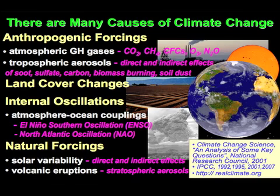First of all, we have to know the natural variability. Then we have to extract a small signal from the sun from what we think are bigger signals from anthropogenic change and land cover changes. And then we have to understand things like indirect effects from the stratosphere.